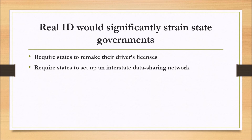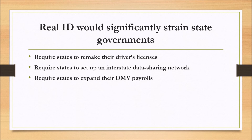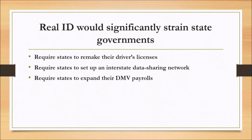It would require the states to set up an interstate data sharing network, which would also require complex administrative, technical, and security measures. It includes a devastatingly difficult mandate that states verify the issuance, validity, and completeness of every birth certificate, immigration document, utility bill, and any other document presented at DMVs as part of an application for a Real ID card — yet it leaves the DMVs with no way to compel utility companies or other document issuers to cooperate with that verification. It would require states to expand their DMV payrolls, initiate or expand employee training in areas such as security, document verification, and immigration law, and initiate or expand security clearance procedures for their workers.